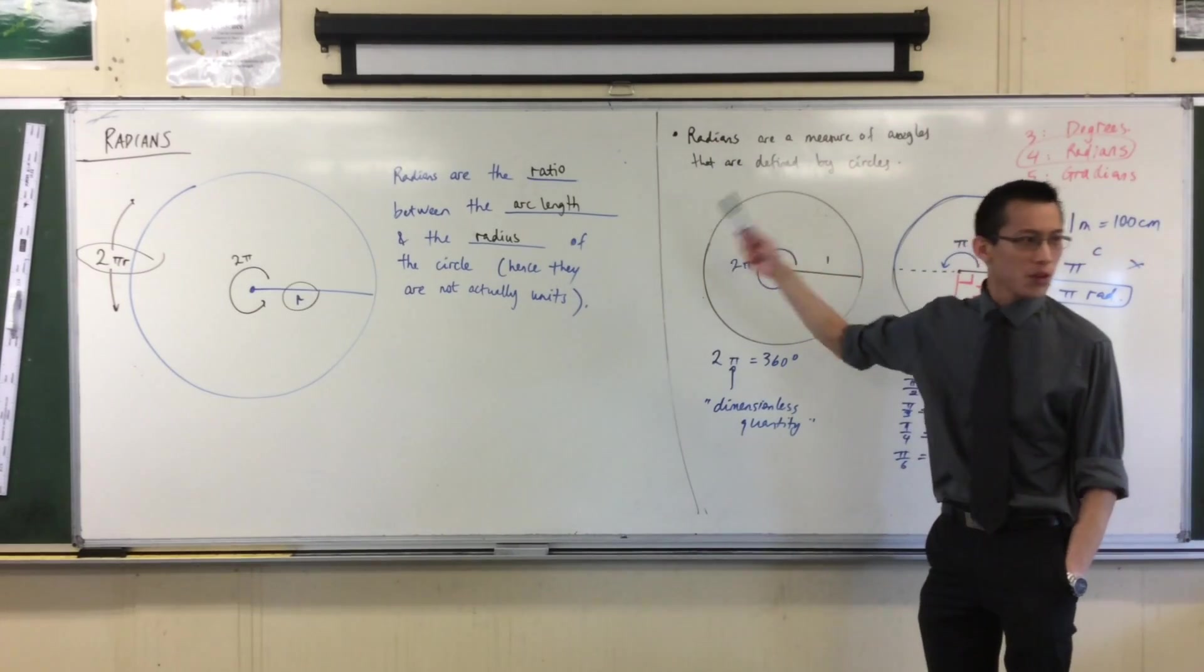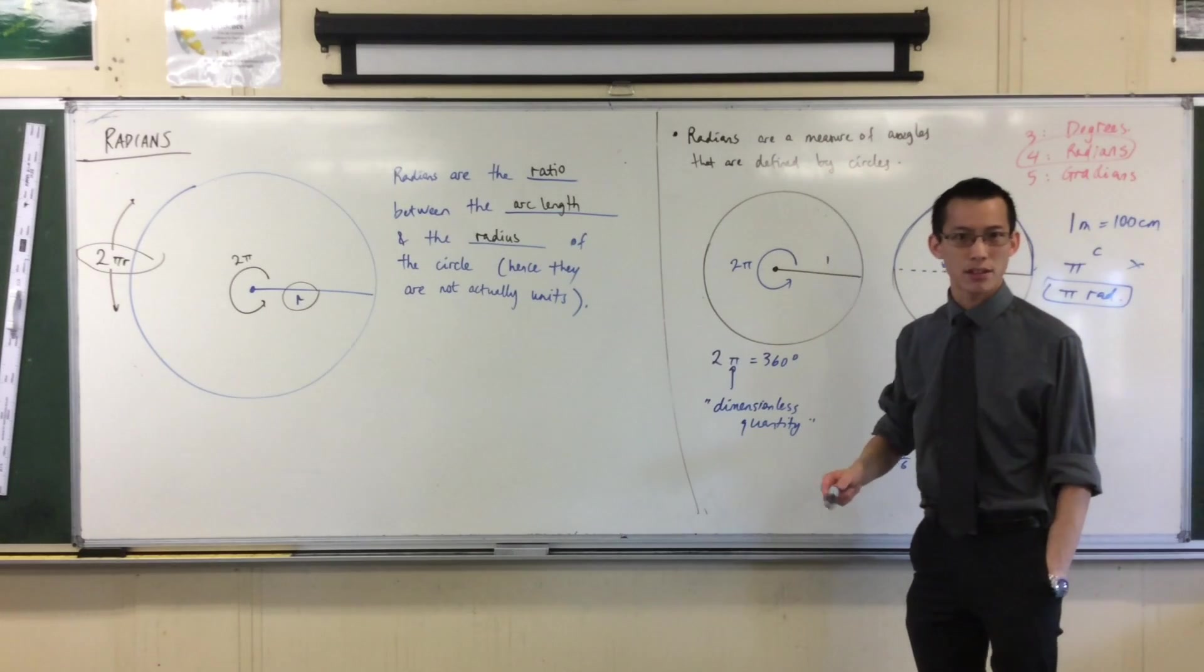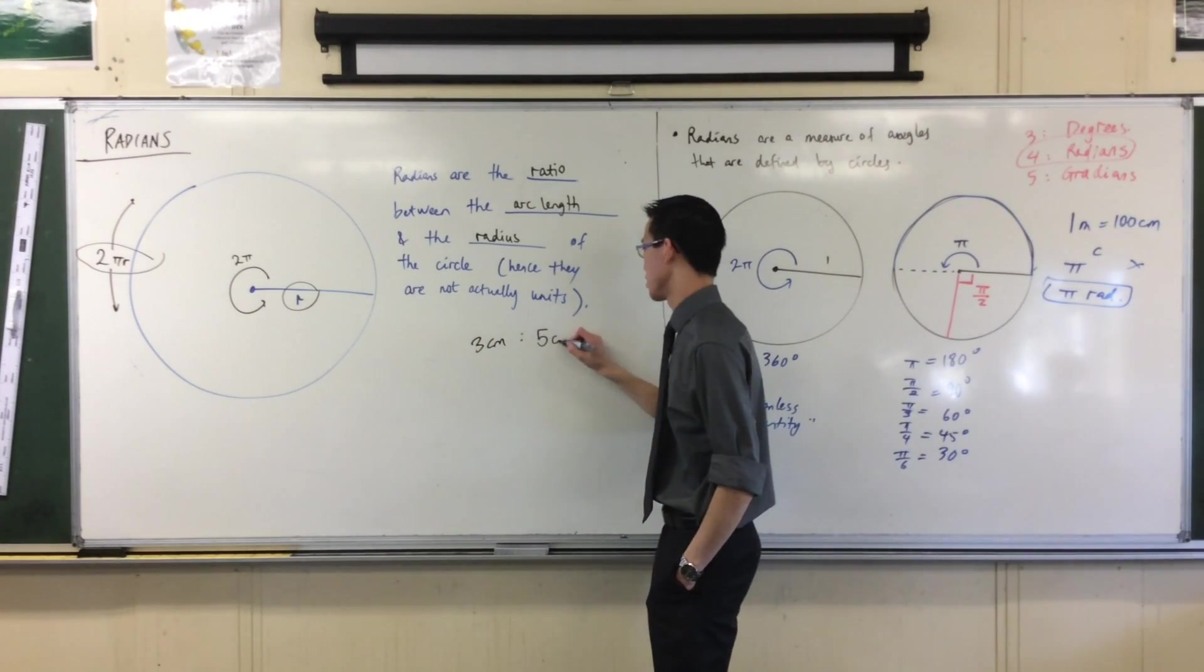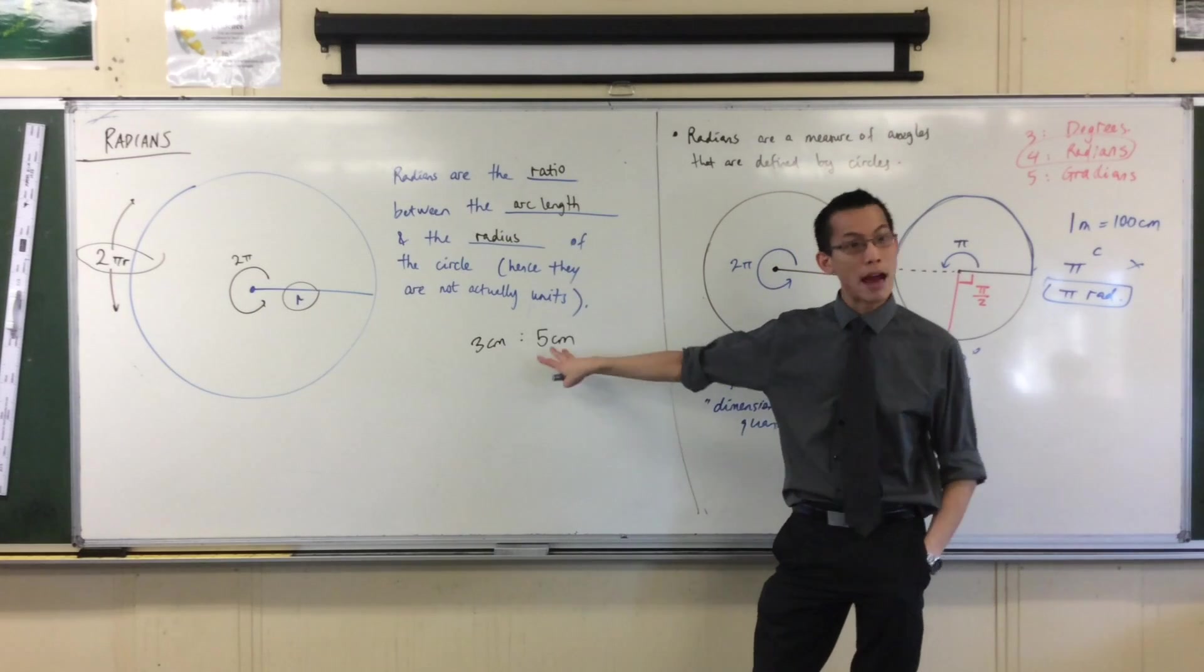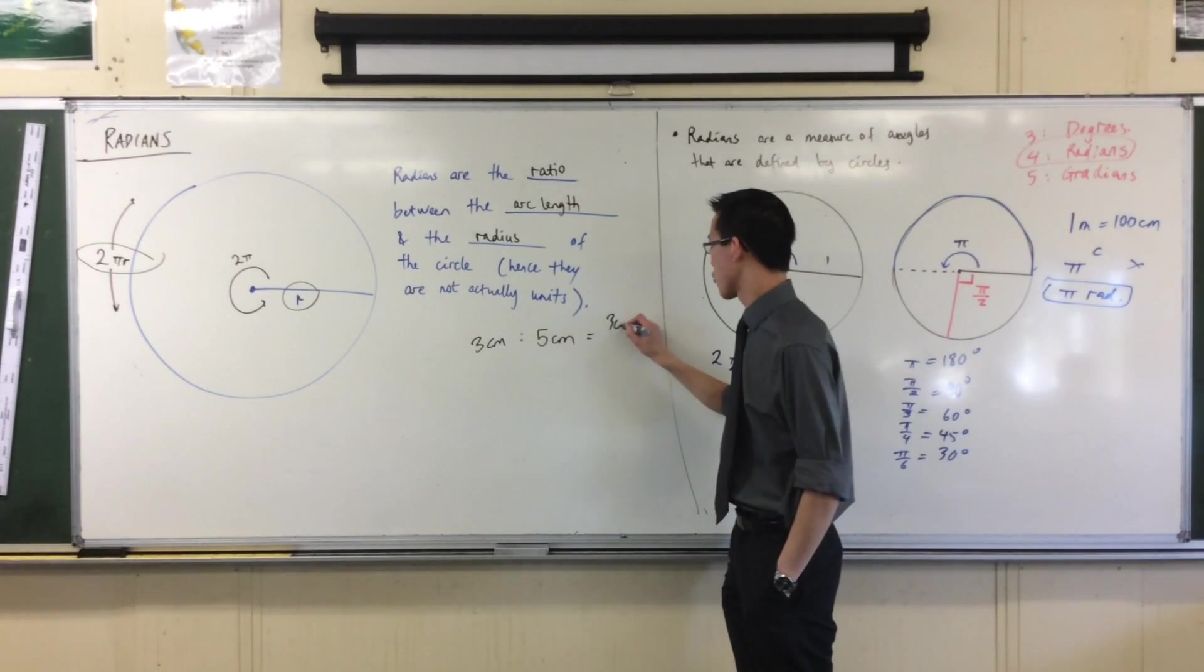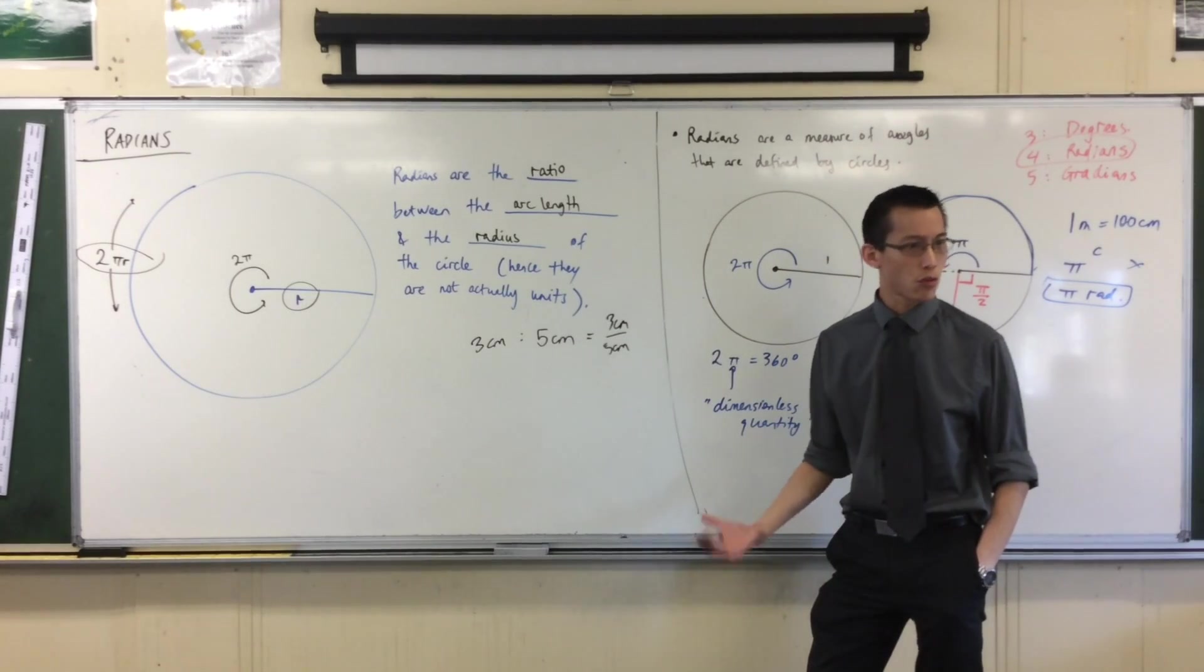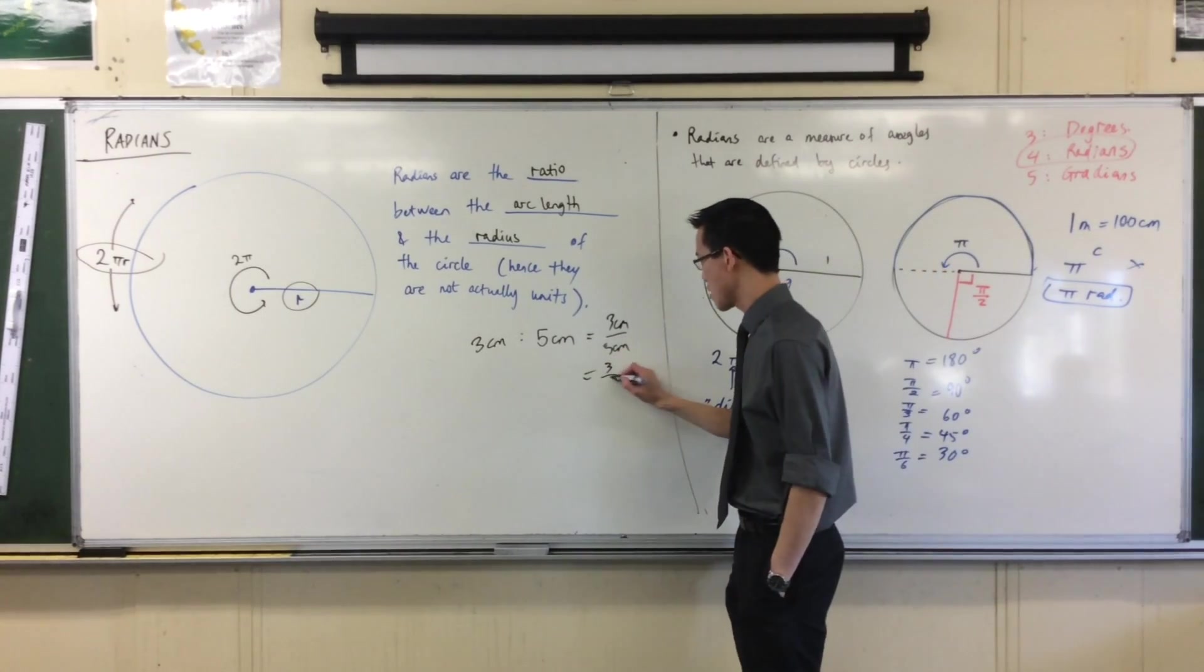Now, ratios don't have units. If I said 3cm to 5cm, this is how I'd write a ratio. But really, this is the fraction 3cm on 5cm. But it's a ratio. It's just 3 over 5.